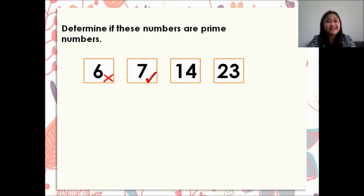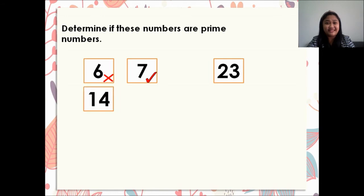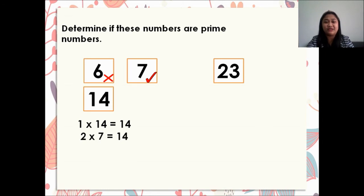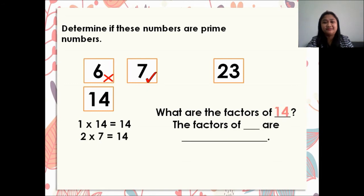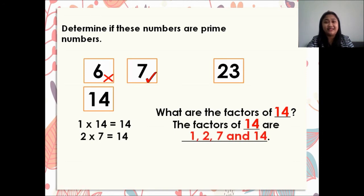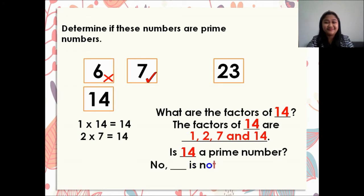Next, let's have 14. We have 1 times 14 is equal to 14, and 2 times 7 is equal to 14. What are the factors of 14? The factors of 14 are 1, 2, 7, and 14. Is 14 a prime number? No, 14 is not a prime number because it has more than 2 factors.